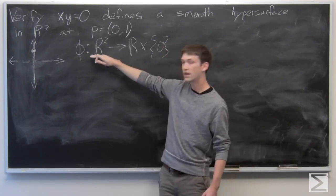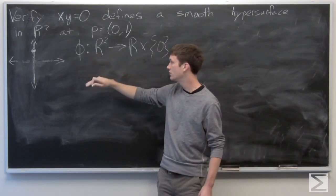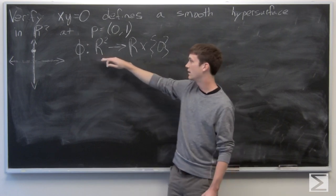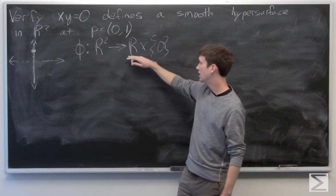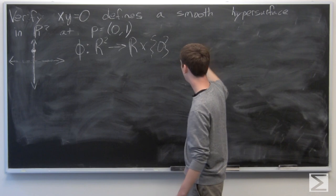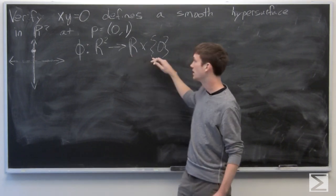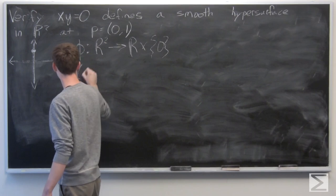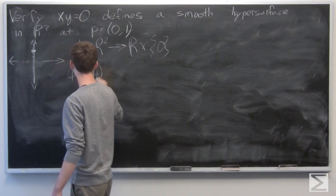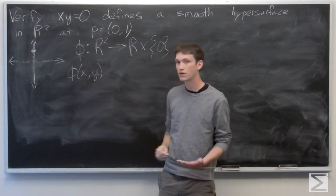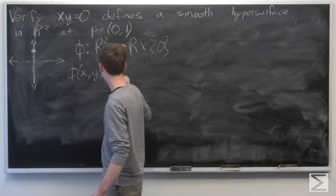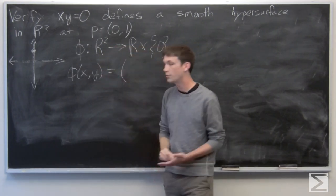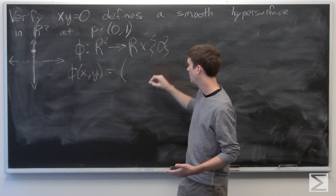So given any two points in R2, our function will take those two points and produce some coordinate in the real numbers and 0. So phi of xy for two points in R2 is some real number and 0.